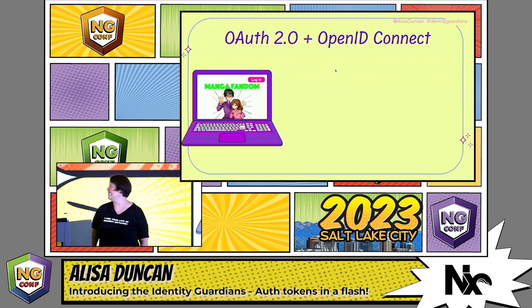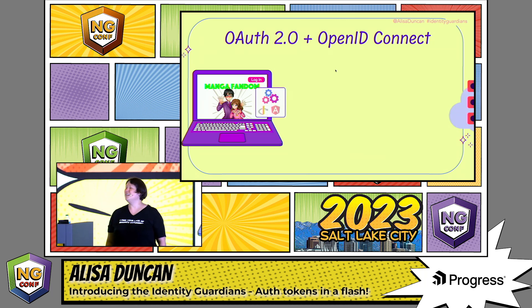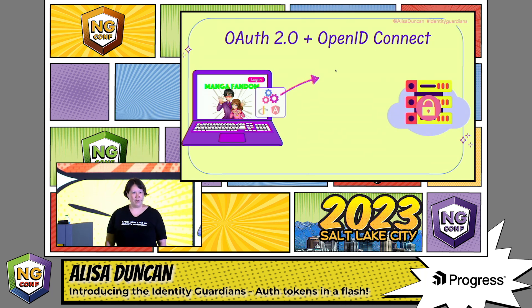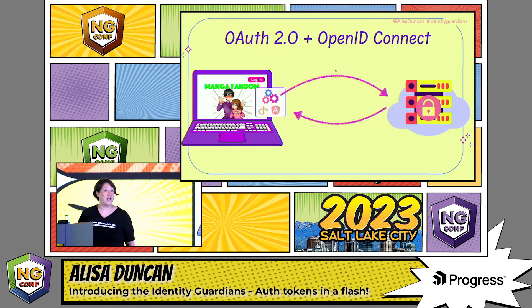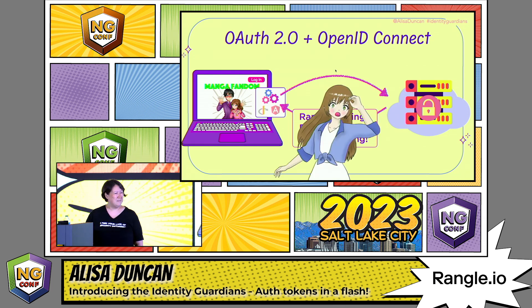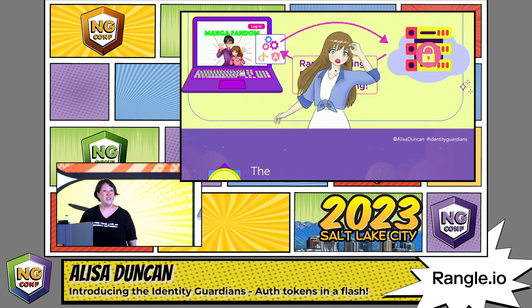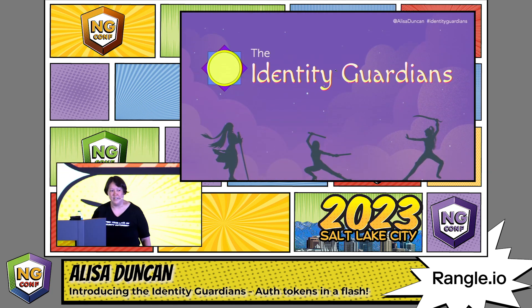It works like this. Let's say you're working on a manga fandom Angular application. You're going to add an OIDC certified library to it that'll handle the OAuth handshake with the authorization server. And in this process, you're going to get back up to three strings — did I say random? I meant incomprehensible. But never fear, because these three strings unleash the identity guardians.